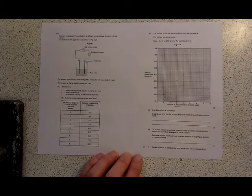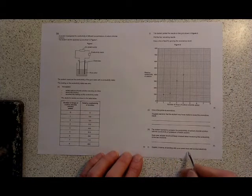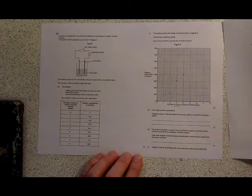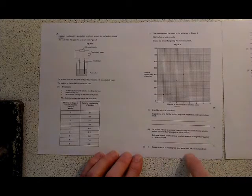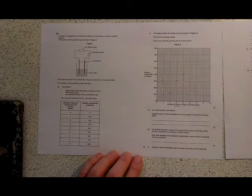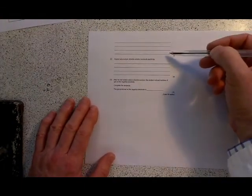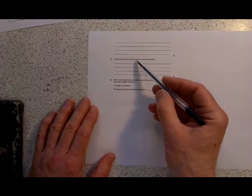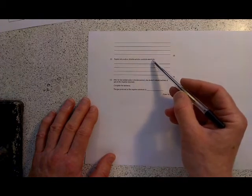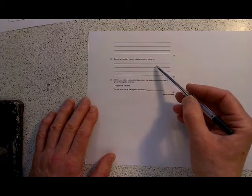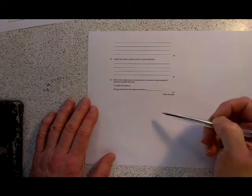The question then goes on to some theory. Explain in terms of bonding why pure water does not conduct electricity. You would say pure water is a simple covalent molecule, and it does not have any free ions or delocalized electrons that can move through the solution. Explain why sodium chloride solution conducts electricity, because it contains ions that are free to move and carry charge through the solution.